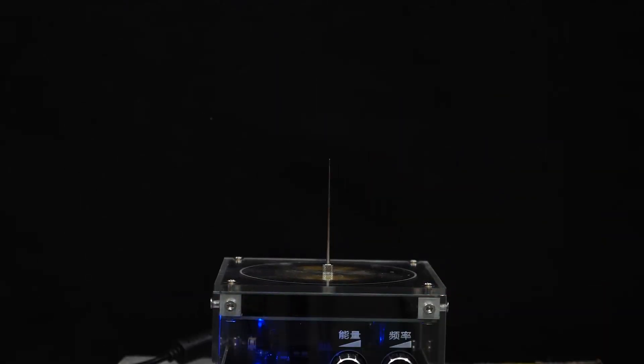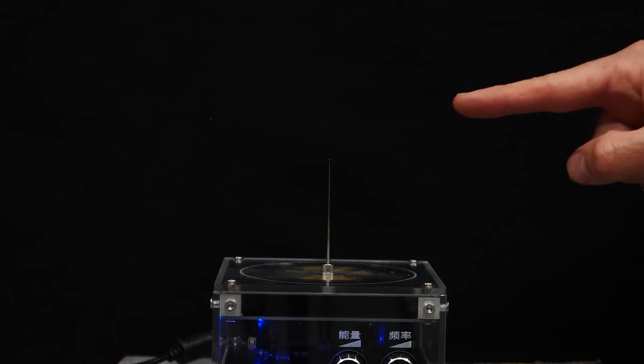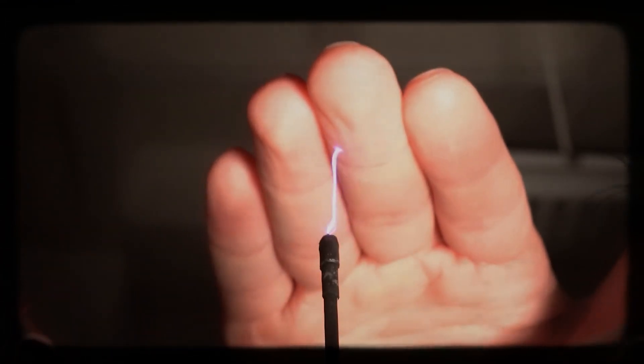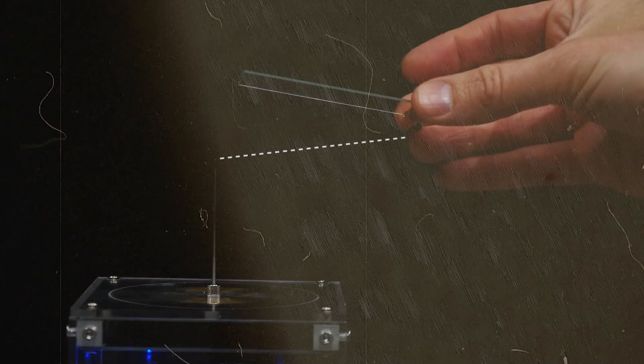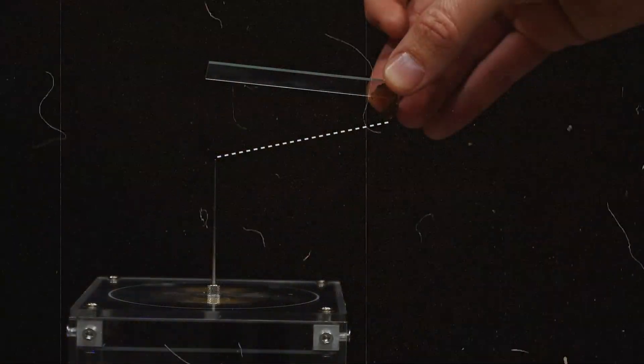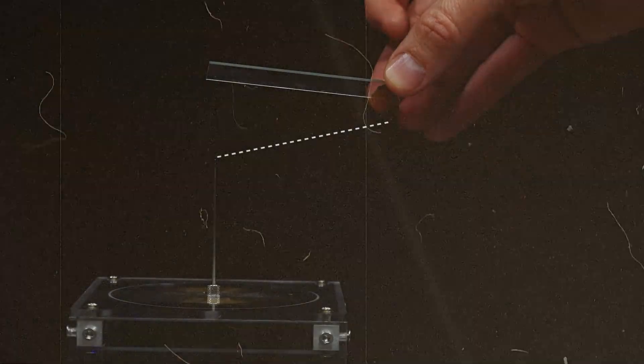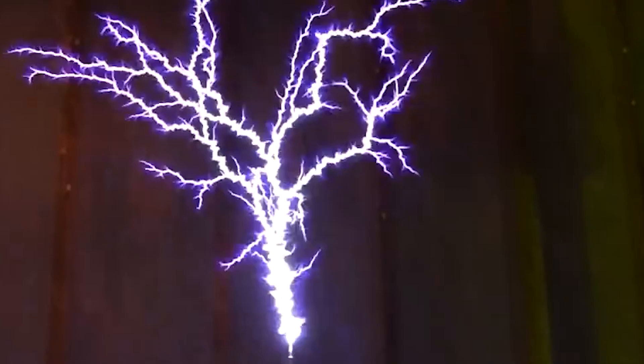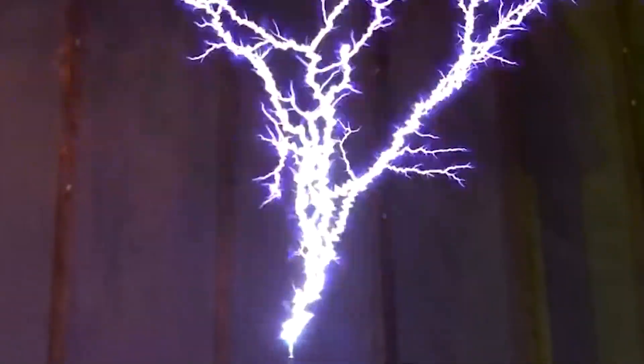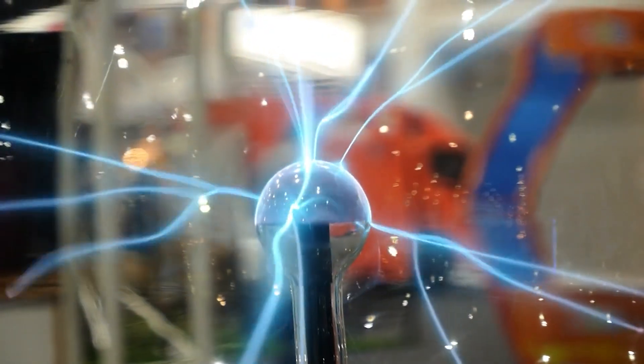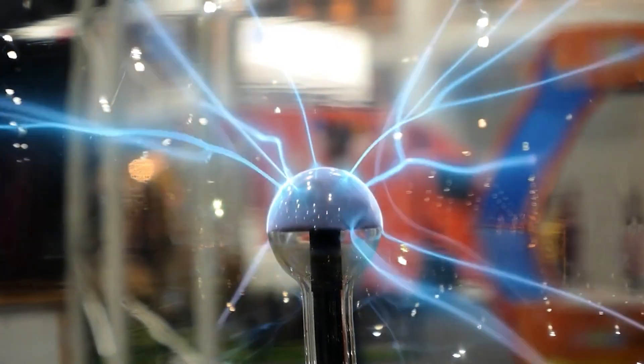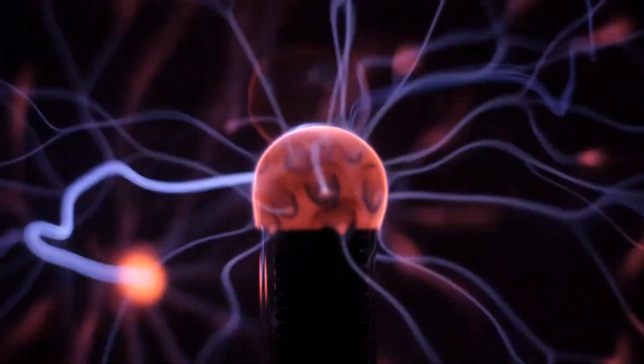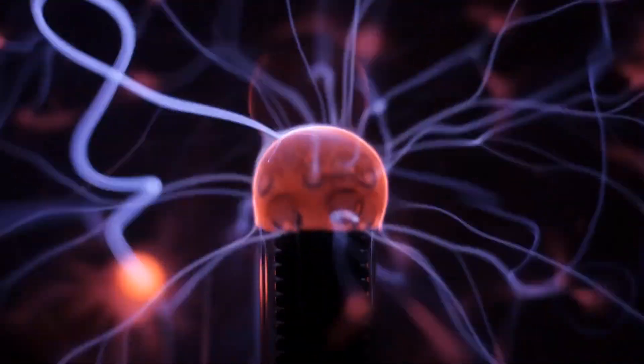Circuits can be closed wirelessly, sparks can be guided through predefined routes, and plasma channels can even be made to touch specific objects. The technology works not through brute force, but through subtle balance. The sound waves continuously shape the surrounding air, creating dynamic paths for the electricity to follow. Each adjustment in frequency or intensity changes how the plasma moves, making this method flexible, energy efficient, and surprisingly quiet.